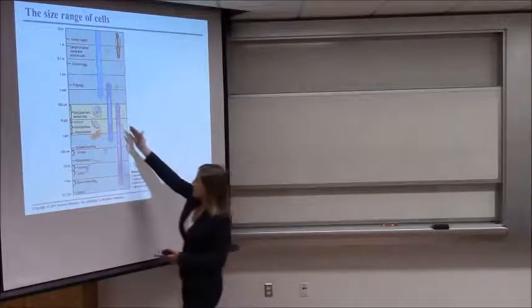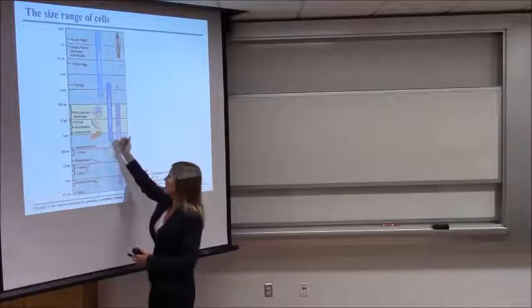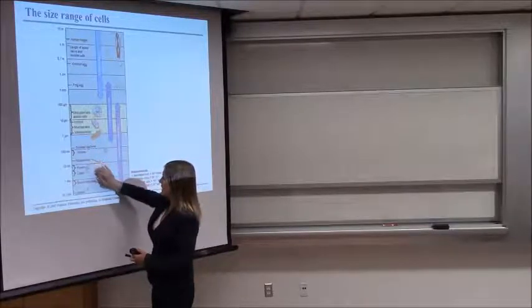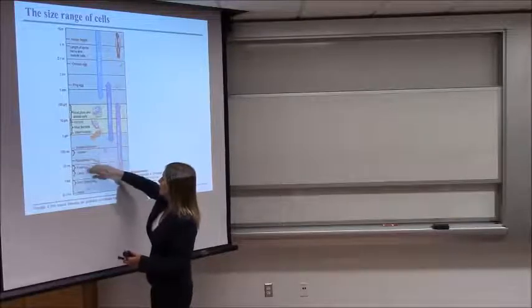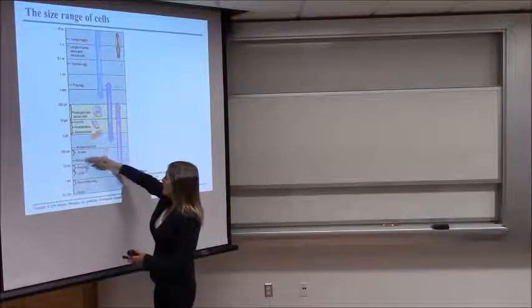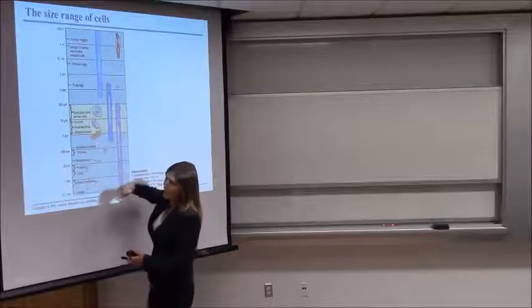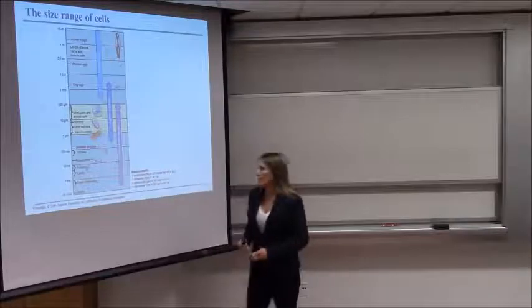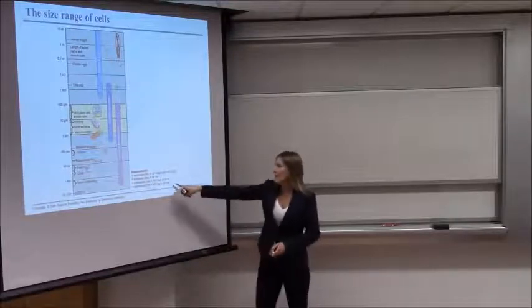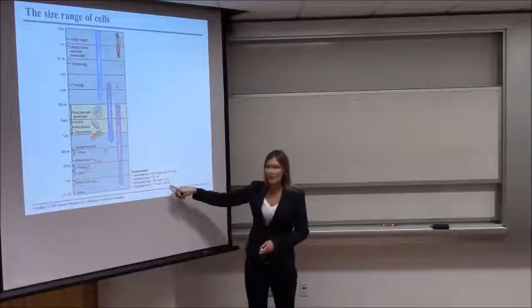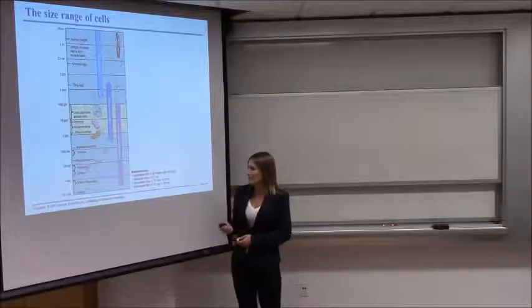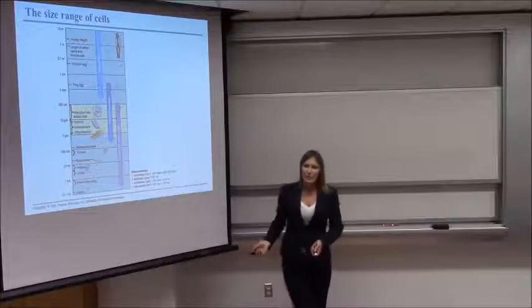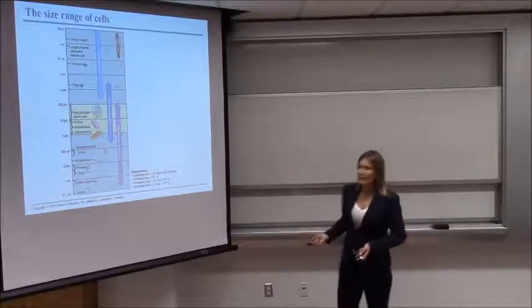Smaller than plant and animal cells are bacterial cells — prokaryotic cells. Smaller than those are some of the organelles we'll look at today. Somewhere in between the size of bacteria and the various organelles, which are the cell parts, you have viruses. Viruses are very, very small — approximately ten to the minus nine meters, so a nanometer is the approximate size of a virus. Again, not important to memorize those numbers; it's just giving you relative sizes of cells.